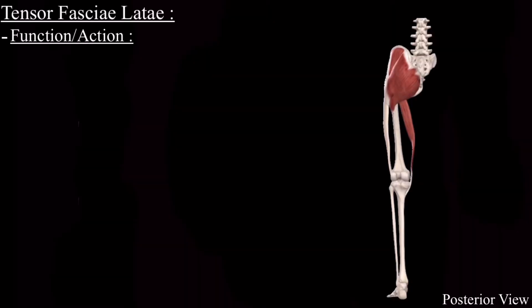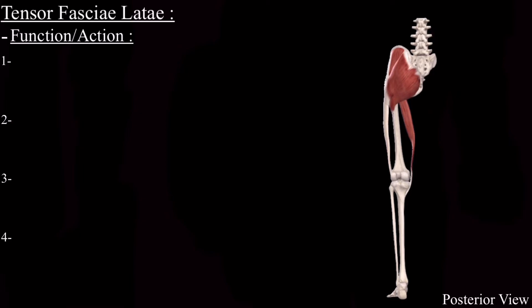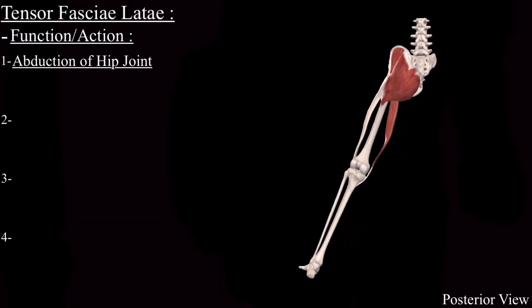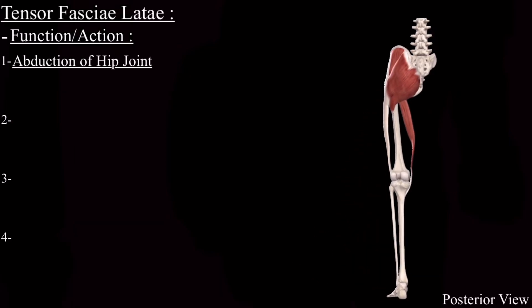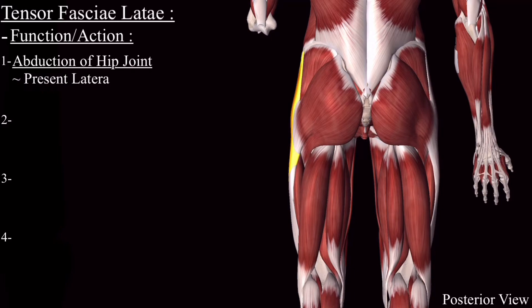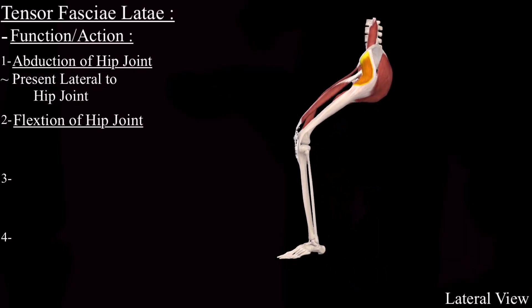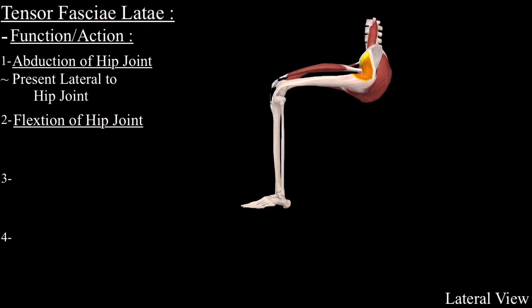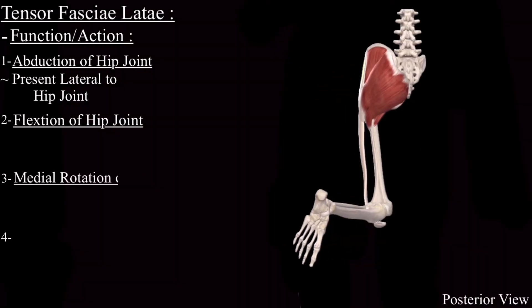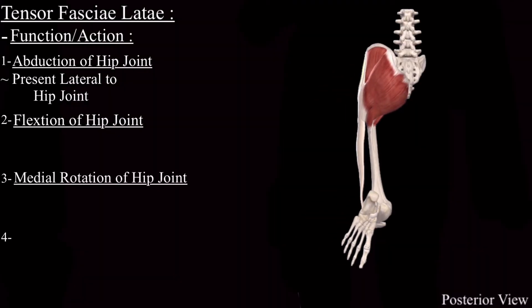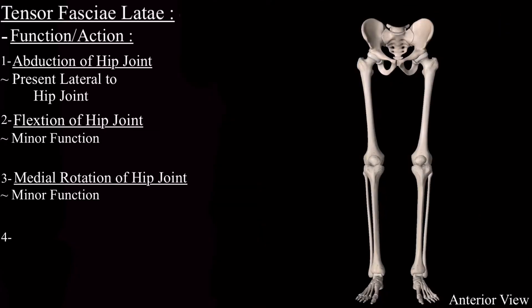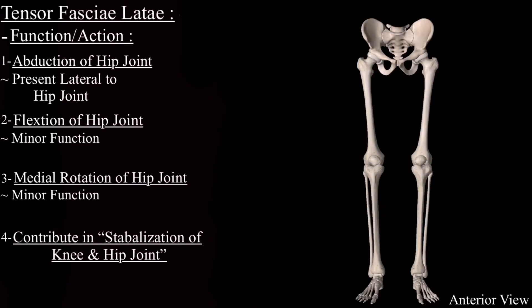Next are the functions and actions of the tensor fasciolata. It helps in the abduction of the hip joint, which makes sense because it is present lateral to the hip joint. It also helps in the flexion of the hip joint and the medial rotation of the hip joint. These are the minor functions of this muscle. It also contributes to the stabilization of the knee and the hip joint.